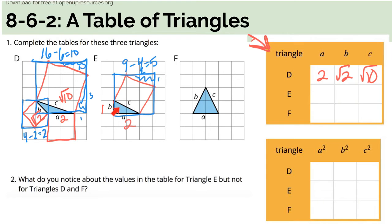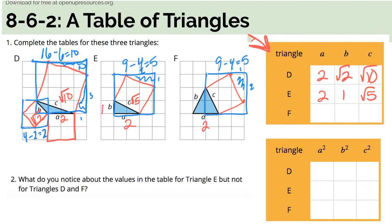On triangle E, sides B and A were pretty easy: 1 and 2. And then for side C, I drew my big square around my smaller tilted square. The area is 9, subtract off 4 for the triangles in the corners, and end up with 5, which means C has a length of the square root of 5. Again, in triangle F, side A was easy to figure out. Side C also came out to the square root of 5, and if you notice, side B is going to be the same thing — the square root of 5. So I end up with 2, square root of 5, and square root of 5.